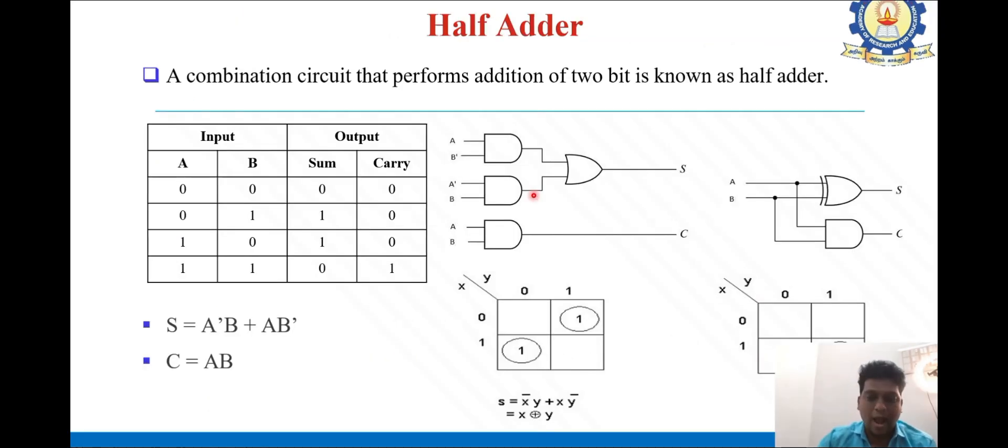First, we'll see the half adder. A half adder is a combinational circuit that performs addition of two bits. Here we are using two bits A and B only, so the combinations of inputs are 0 0, 0 1, 1 0, and 1 1.